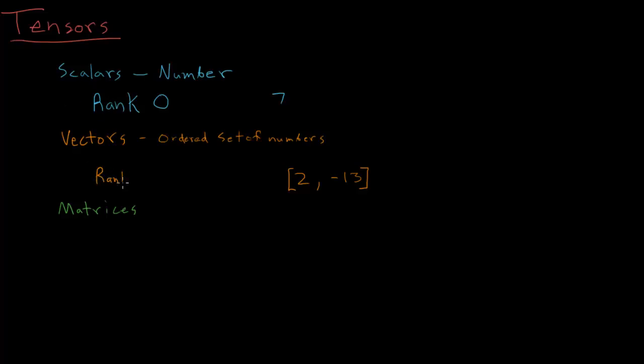Rank one. Right? So a rank one tensor is what you're used to thinking of as a vector. Rank zero tensor is what you're used to thinking of as a scalar, right? So this is like one row or one column of numbers.